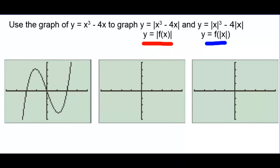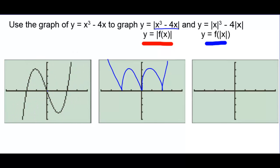Use the graph of y equals x to the third minus 4x to graph y equals the absolute value of (x to the third minus 4x), and y equals the absolute value of x to the third minus 4 times the absolute value of x. On the first part, when you take the absolute value of the entire function, any values that are negative are now positive — so the negative portions flip above the x-axis. On the second, taking the absolute value of x means the portion to the right of the y-axis duplicates on the other side.